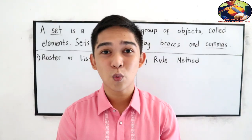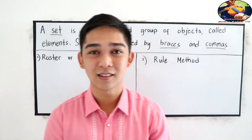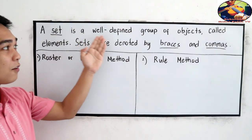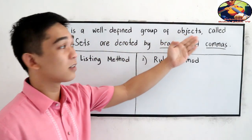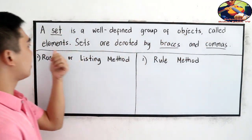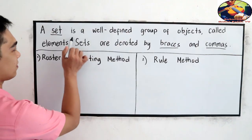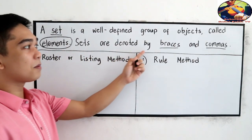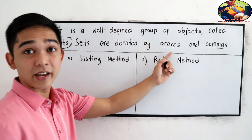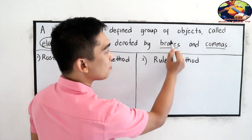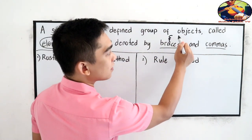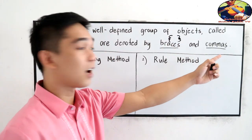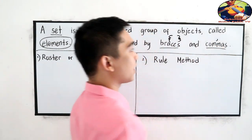First, let us define what is a set. A set is a well-defined group of objects called the elements. Sets are denoted by braces — this is our symbol for braces — and commas.